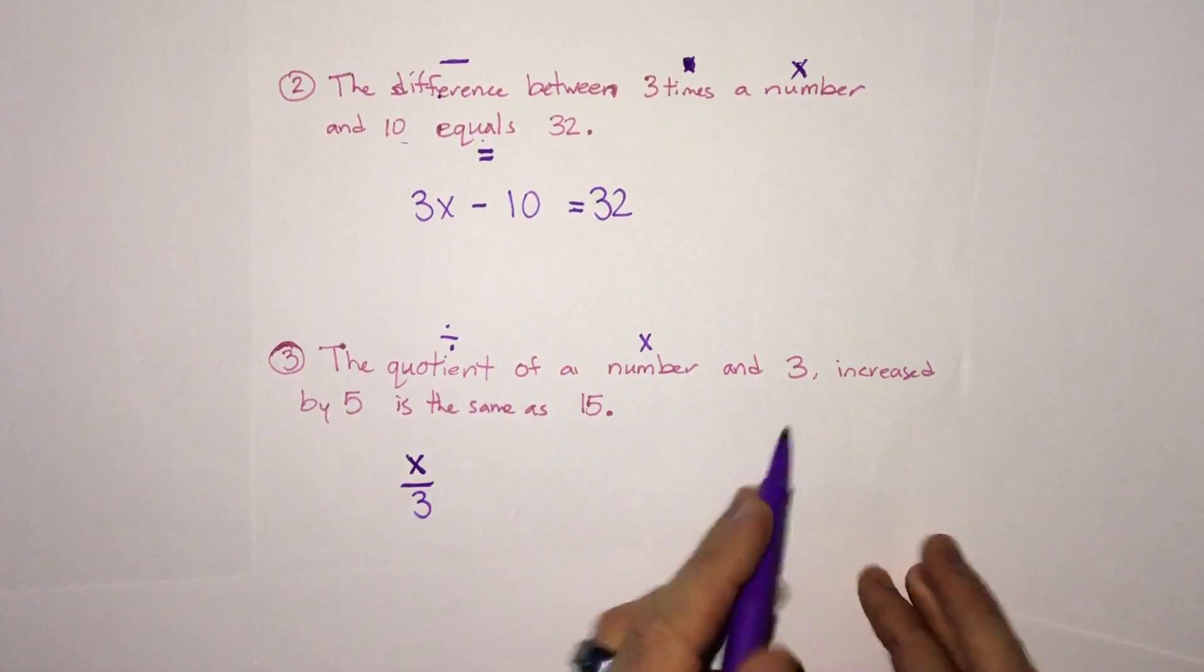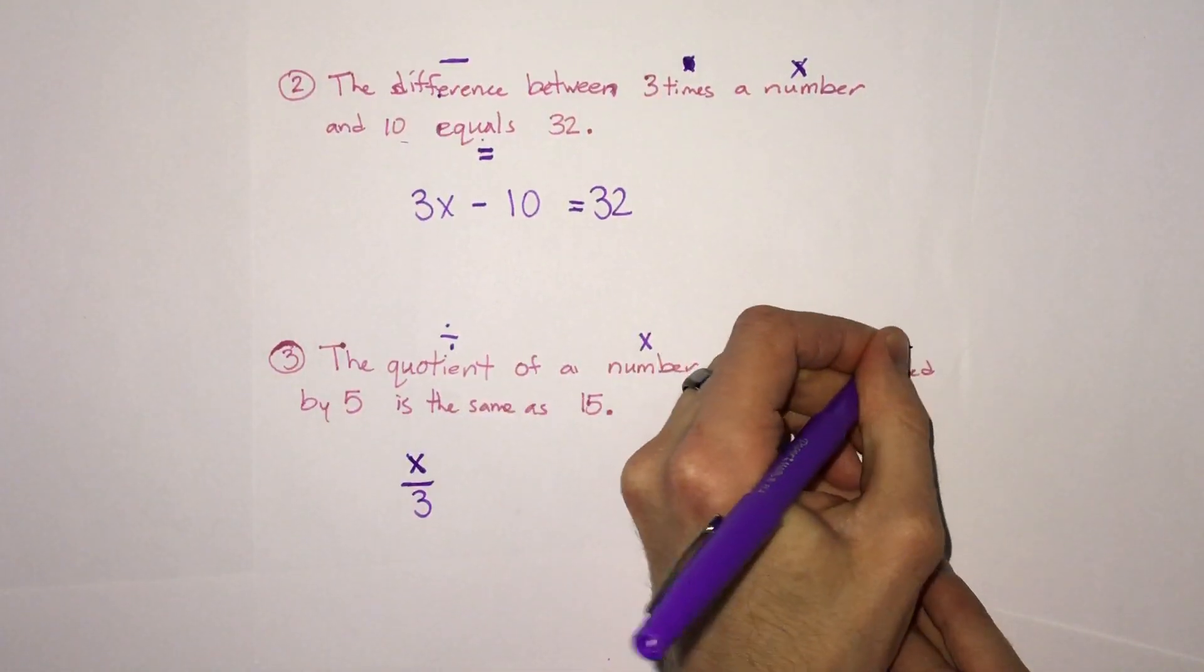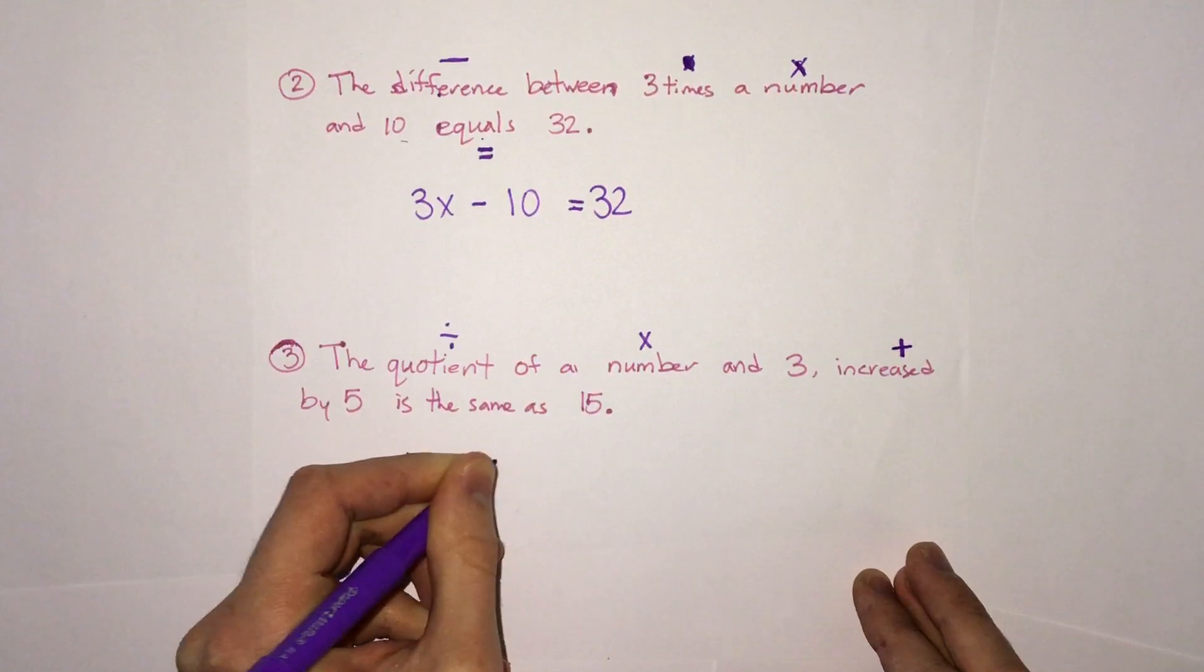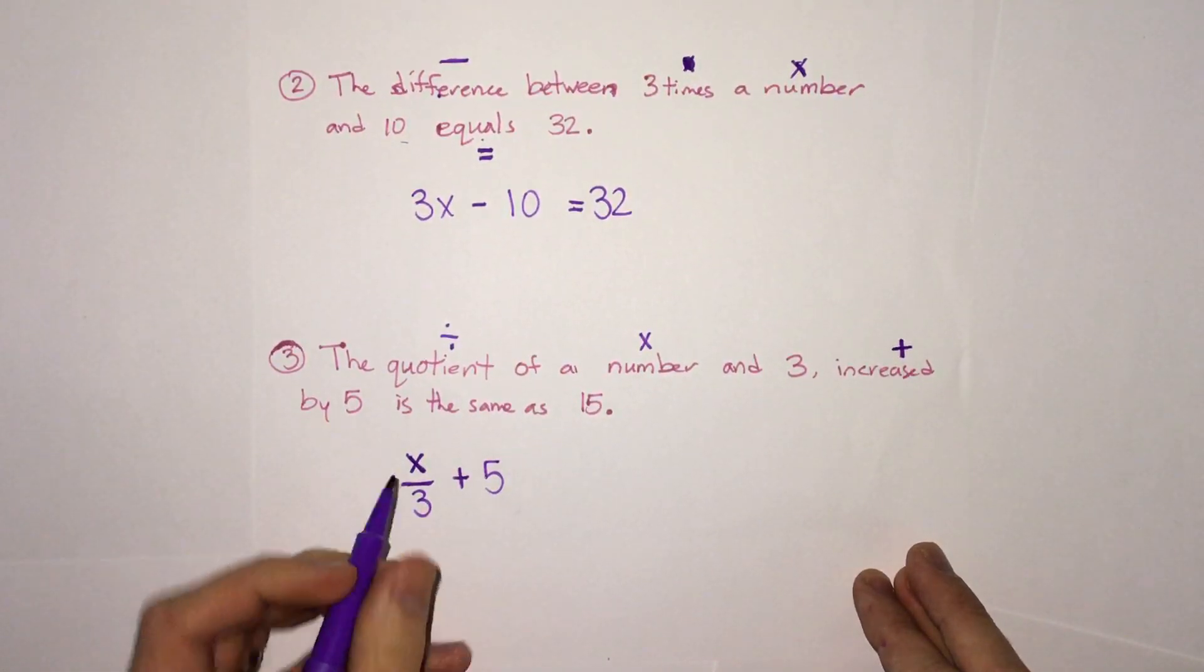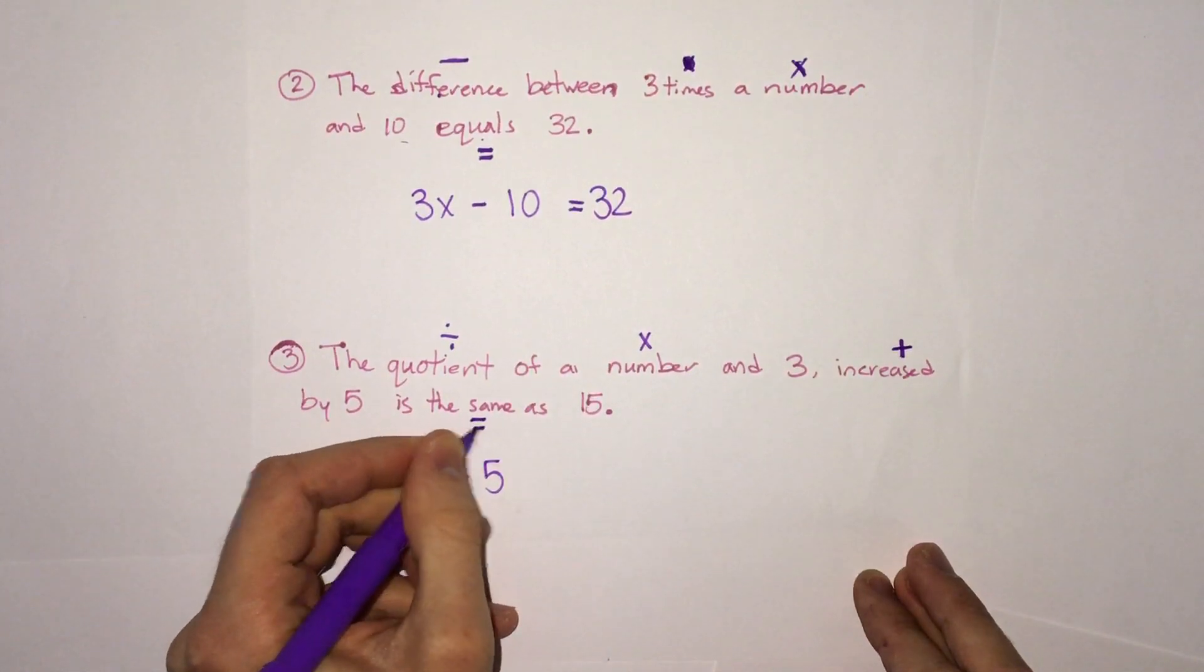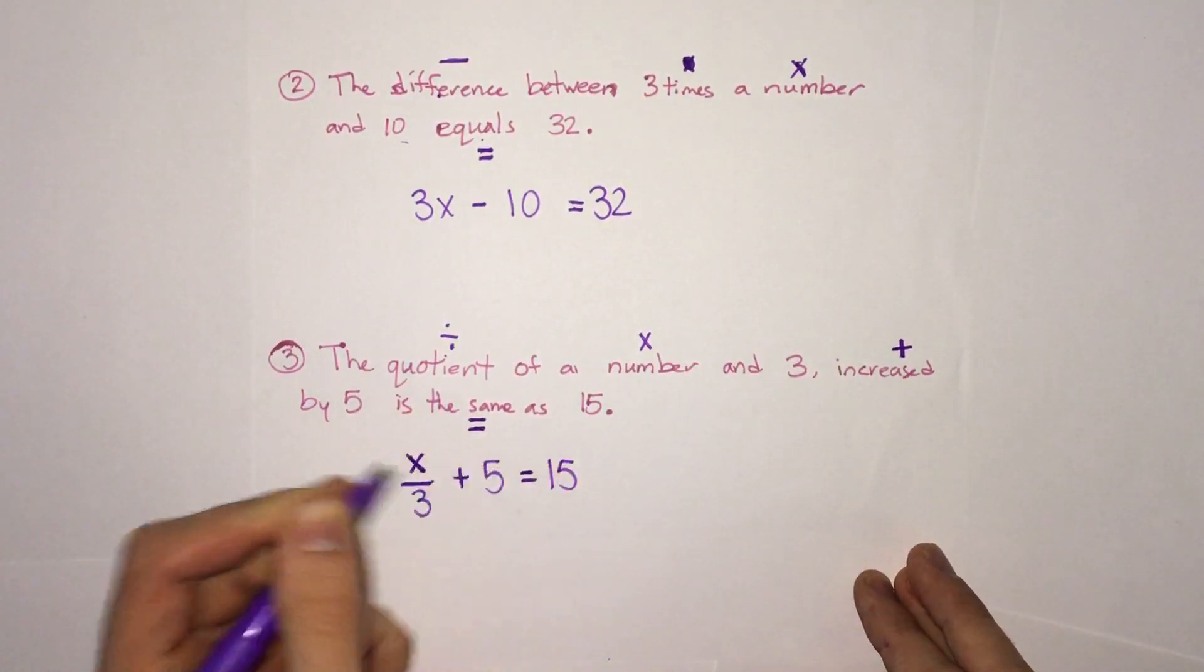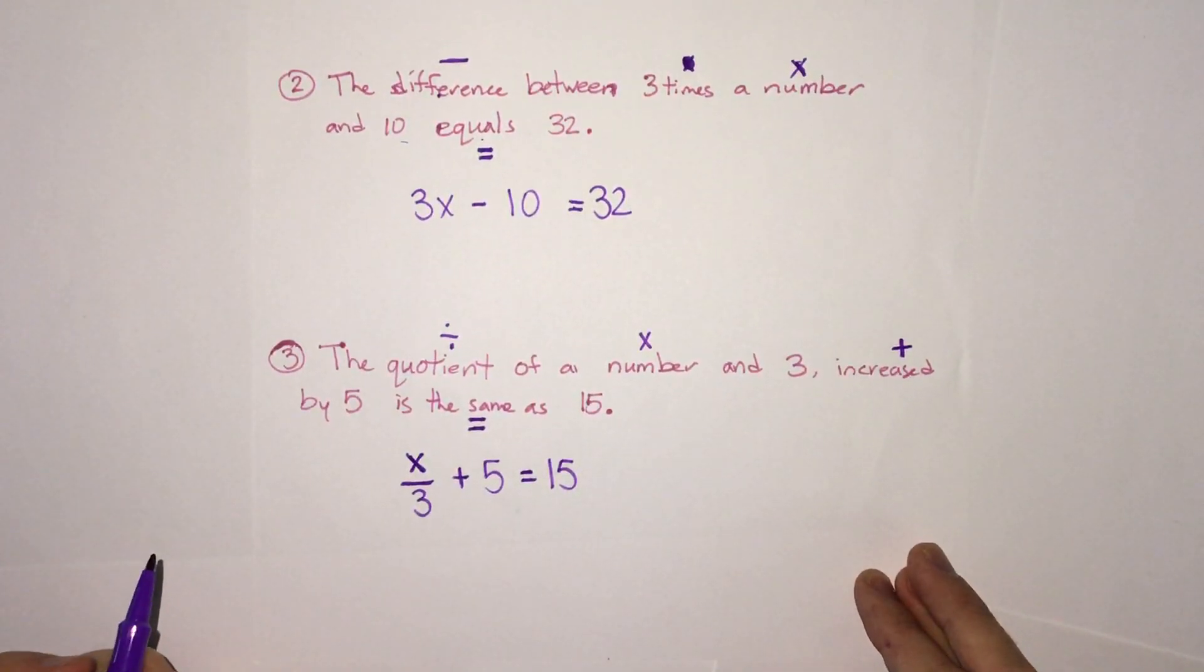So x over three, and then it says it's what? It's increased by five. So increased by tells us addition. So that fraction is increased by five, so plus five. And that's all the same as, so equals 15. X over three plus five equals 15 would be our answer.